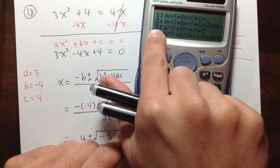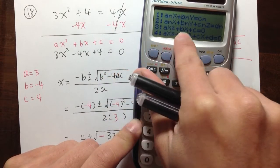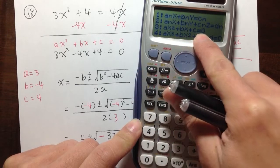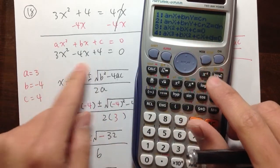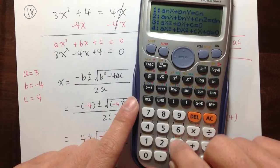Then notice that for option 3, I have ax² + bx + c = 0. And that's exactly what we have, the quadratic equation. Okay, so press 3.